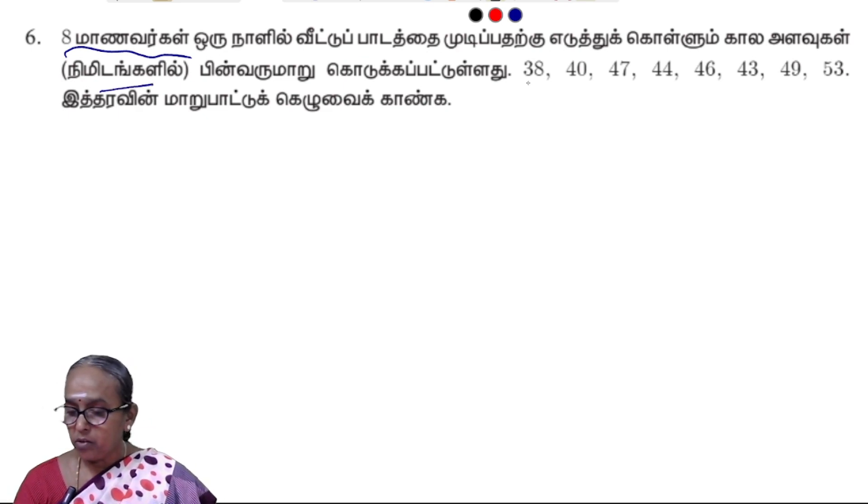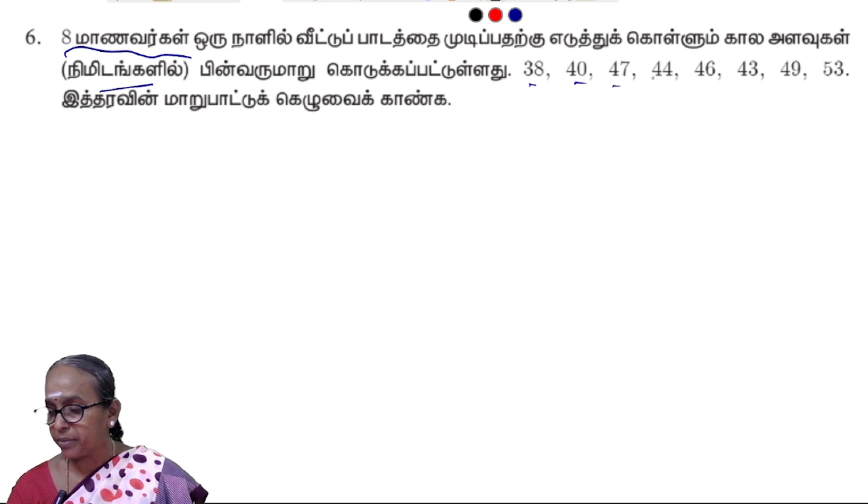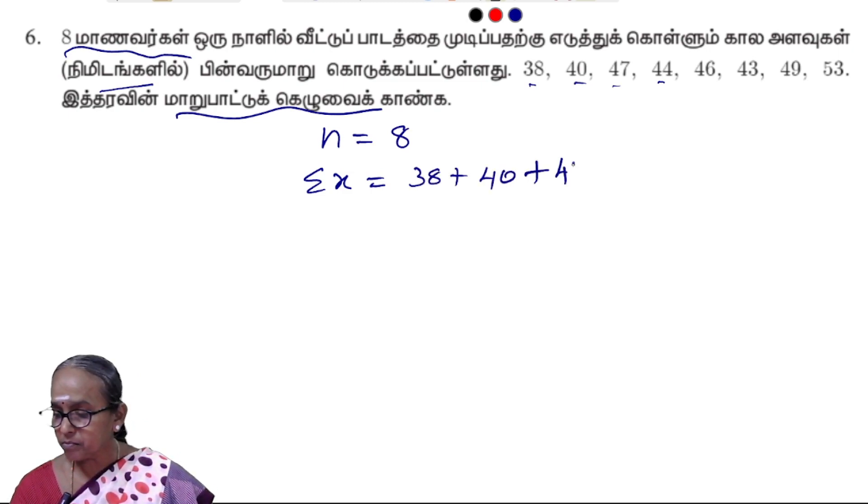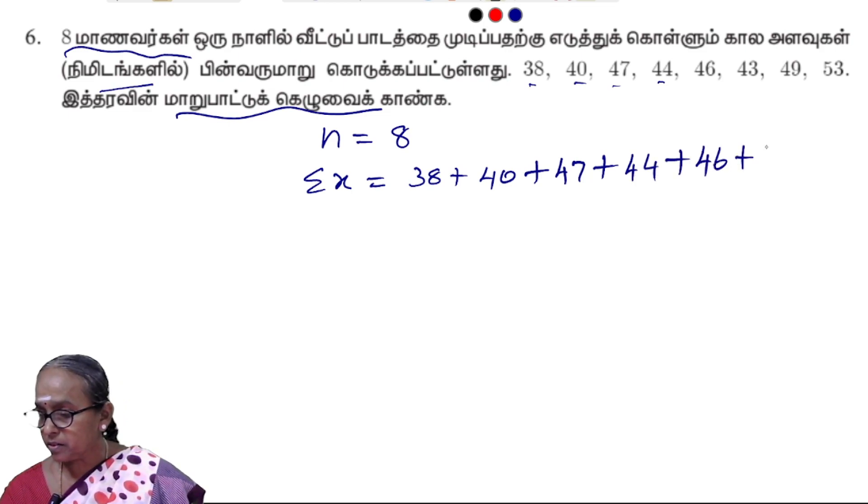First, they will be reading the count. We can say 38, 40, 47, 44, 46, 43, 49, 53. We are going to record this. N is equal to 8. The x bar is equal to summation of x divided by n.